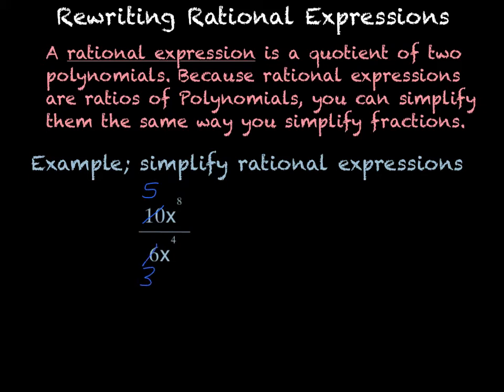They can both be divided by 2, so that would be 5 and 3. And then we have our x's where we have 8 x's up top and we have 4 down low. So that means 4 of them cancel out, leaving us with x to the 4th. So our final answer is 5x to the 4th divided by 3.